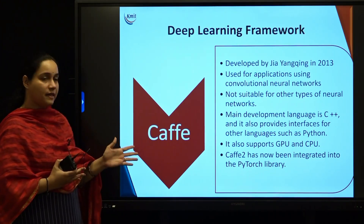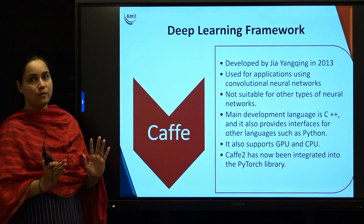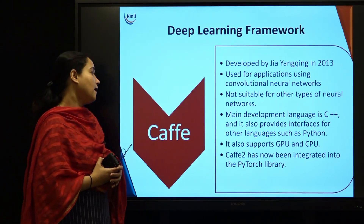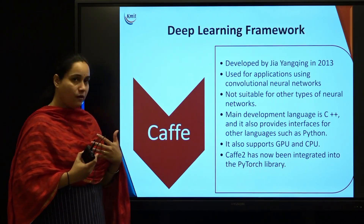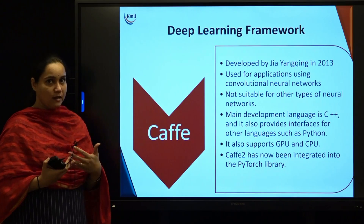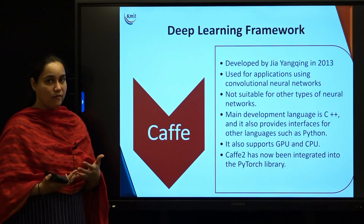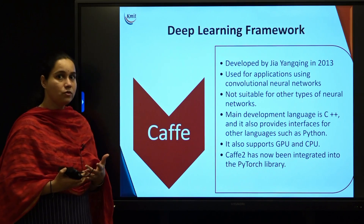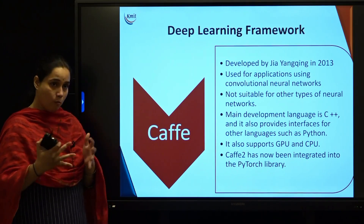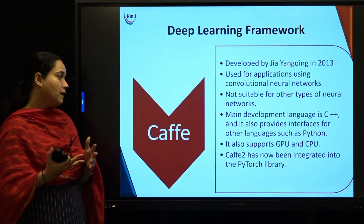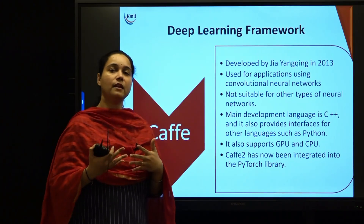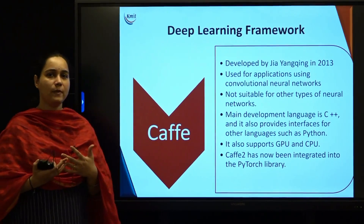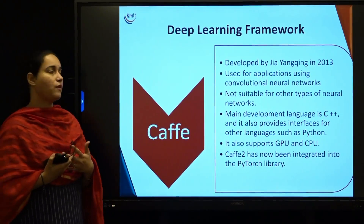Caffe supports both GPU and CPU, unlike scikit-learn. The second version of Caffe has now been merged and integrated inside the PyTorch library itself, so we don't separately use Caffe anymore.